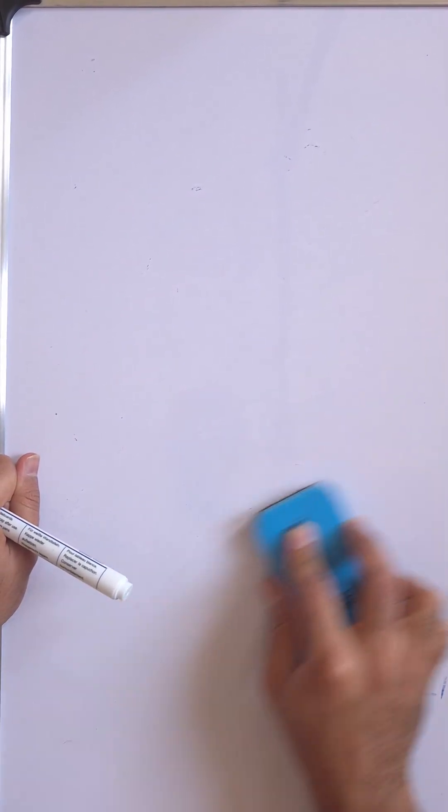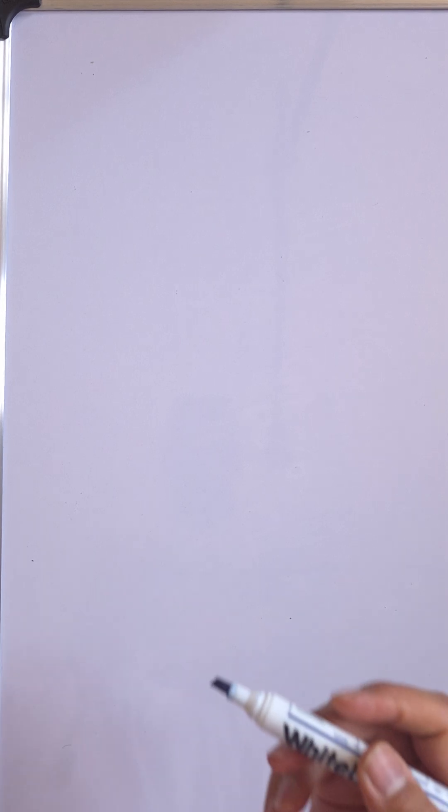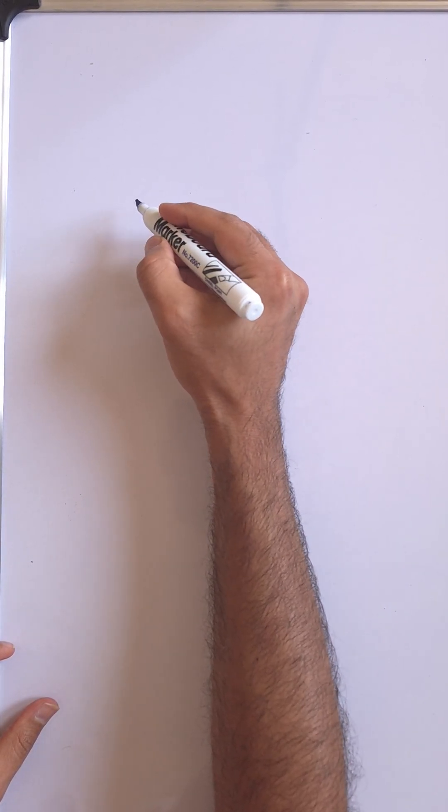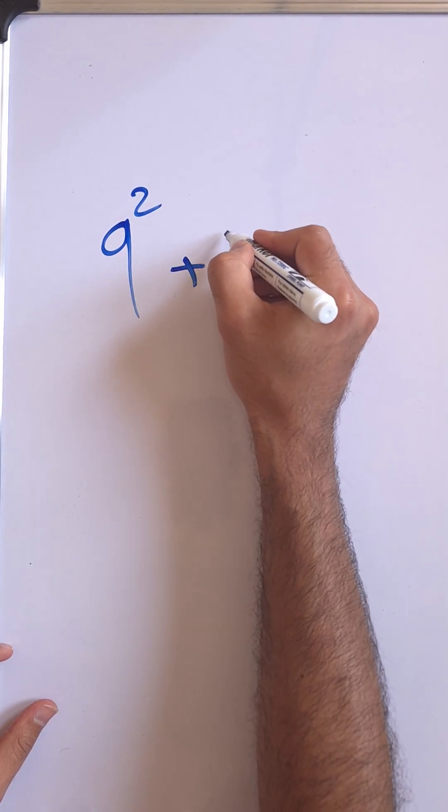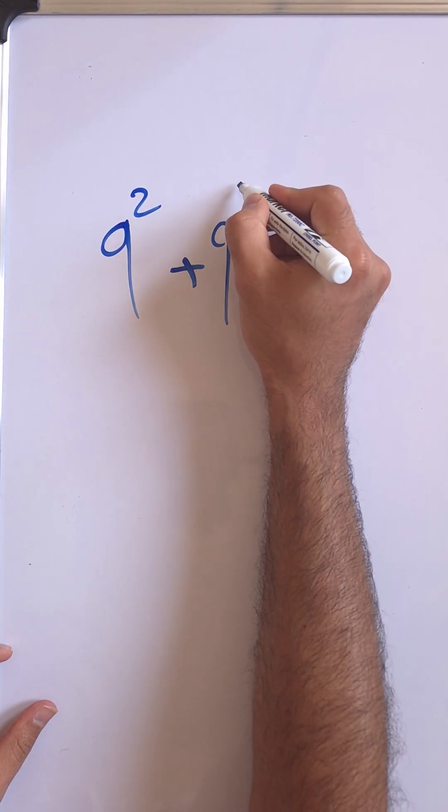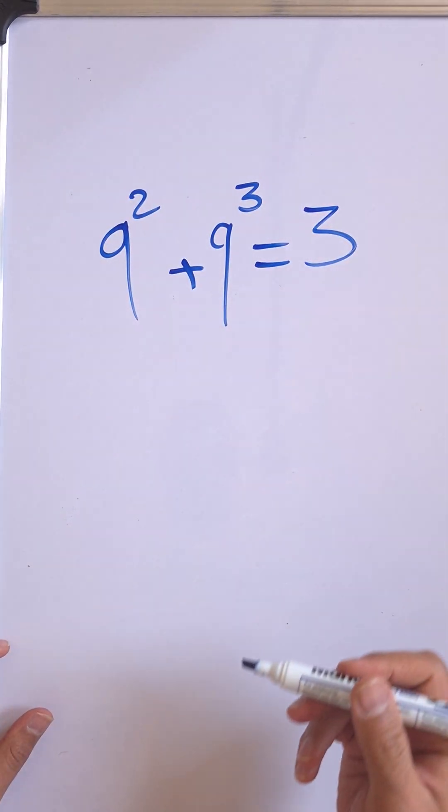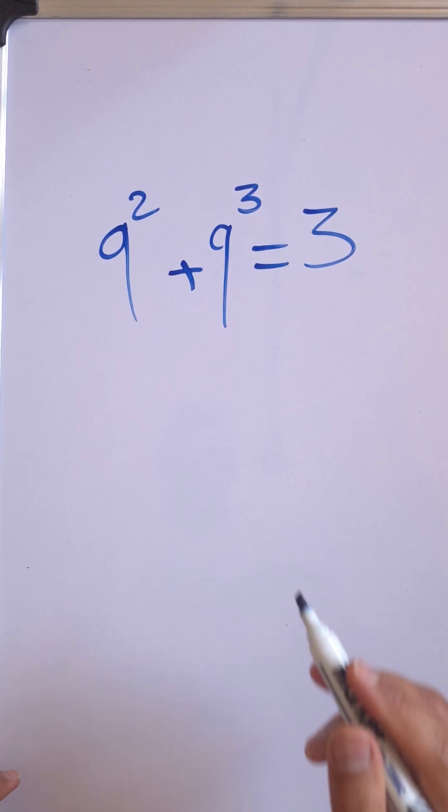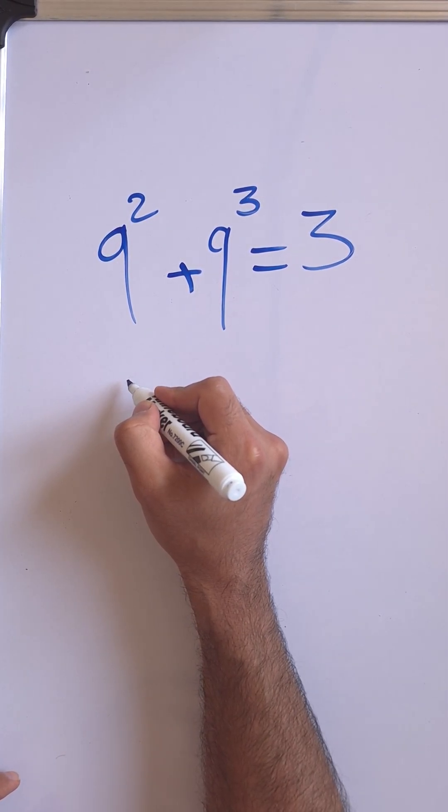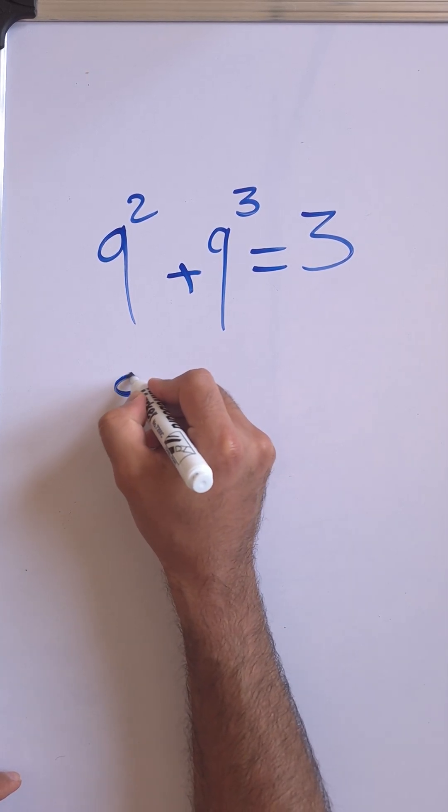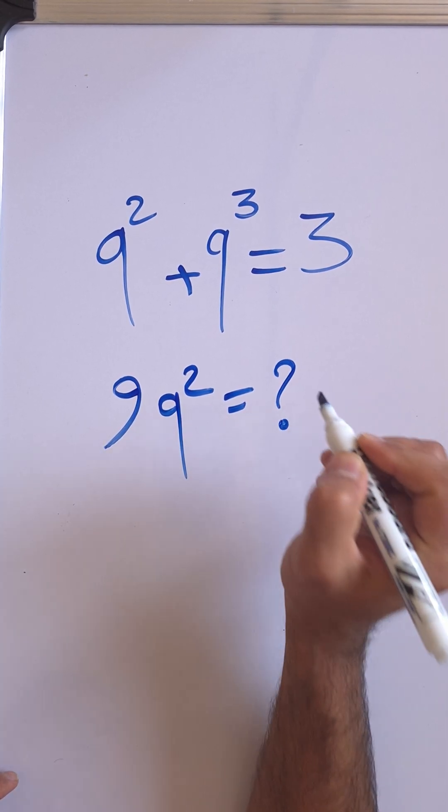Now a bonus challenge for you, which is a little bit more difficult, maybe much more difficult compared to this one. So just imagine we have q squared plus q cubed, or to the power of 3, so it equals 3. This is the assumption: q squared plus q cubed equals 3.